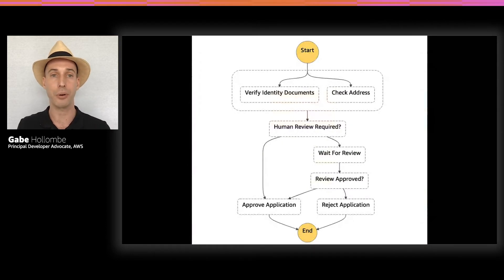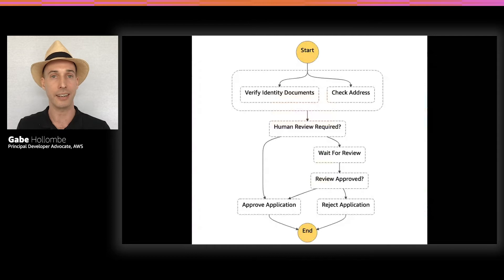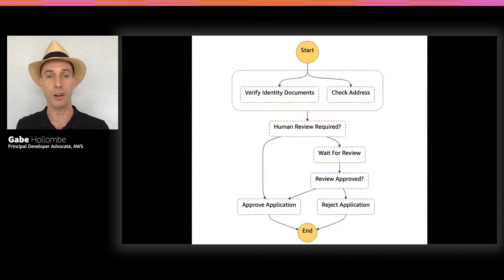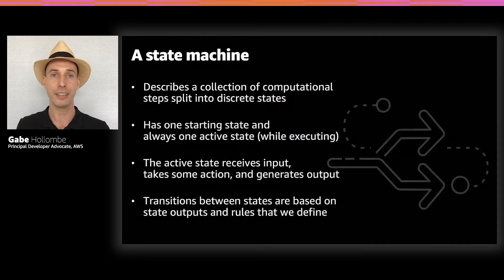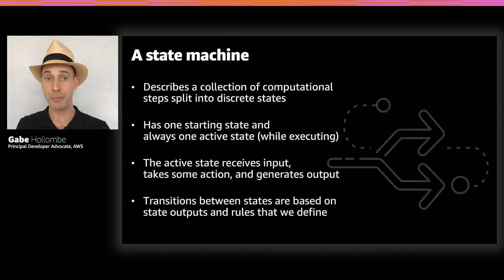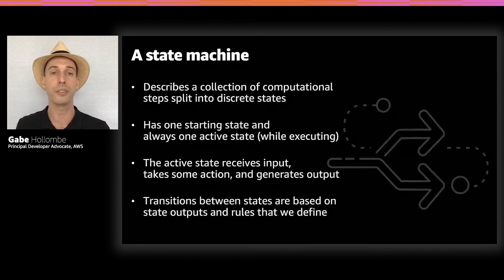This is the same collaboration flow organized differently, where each circle represents a step in the workflow — making it look like an executable flowchart. We start out checking in parallel for identity documents and addresses, then see if a review is required. If so, we wait for human review; if not, we can approve automatically. Once we get the review, we either reject or approve. What you're looking at is something called a state machine — a collection of steps split into discrete states. Every state machine has a starting state, only one state is active at a time, that state gets input, decides what action to take, transitions to the next state, and may generate output.